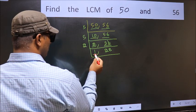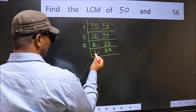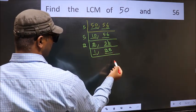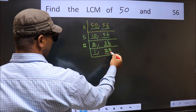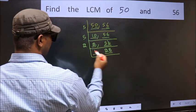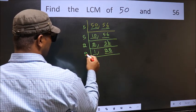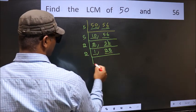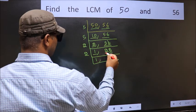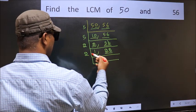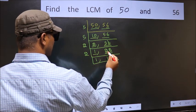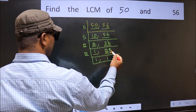Now we got 1 here, so focus on the other number 28. Last digit 8, even, so take 2. First number is 2 — when do we get 2 in the 2 table? 2 ones are 2. The other number 8 — when do we get 8 in the 2 table? 2 fours are 8.